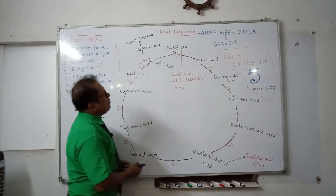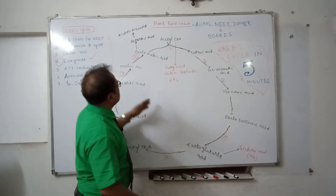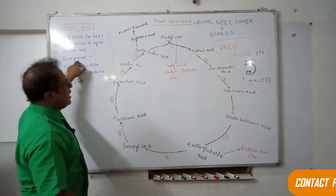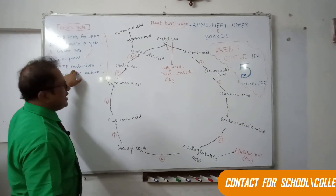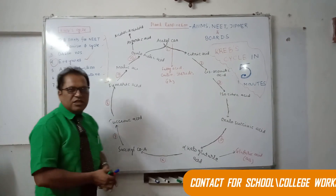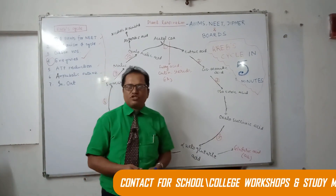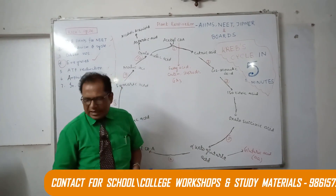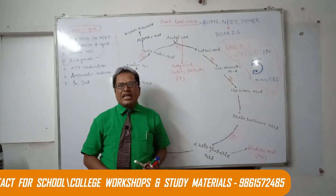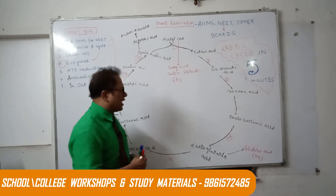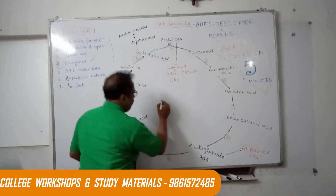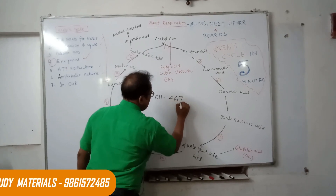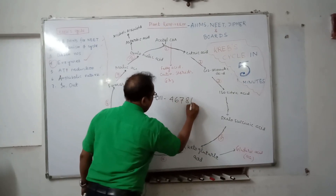Now come to this cycle which we have done last class, covering enzyme names and ATP production. My dear students, remember the phone number mnemonic for all the things we have done. The phone number is 011-467810.